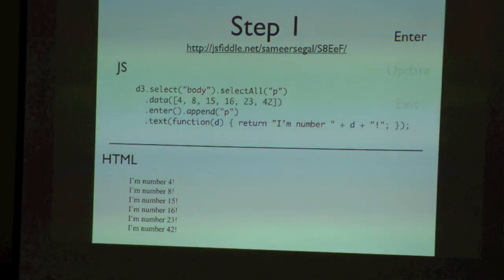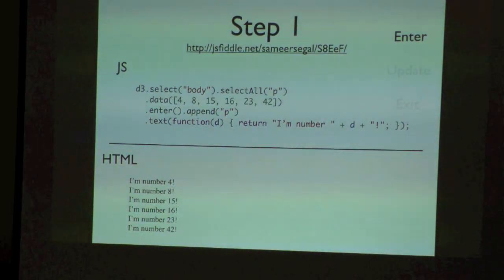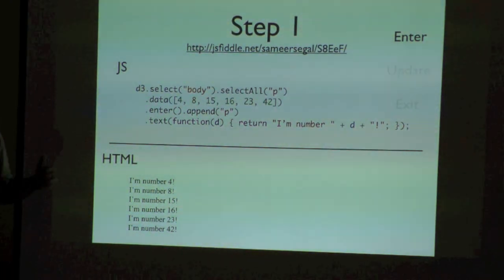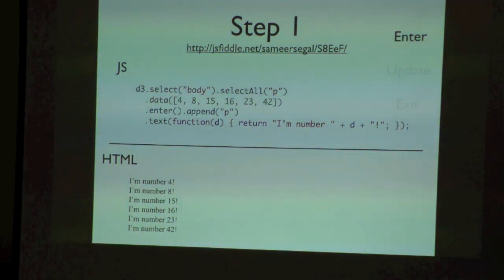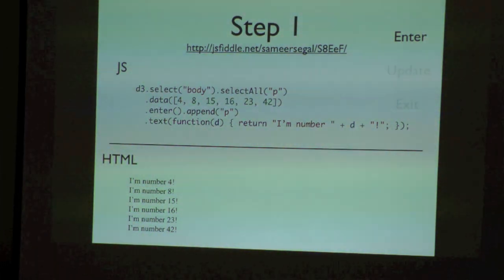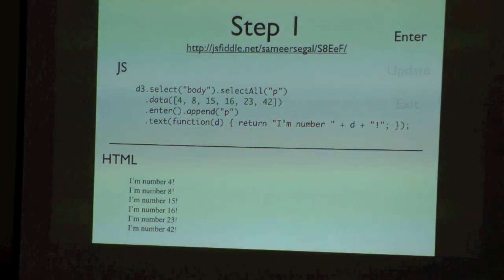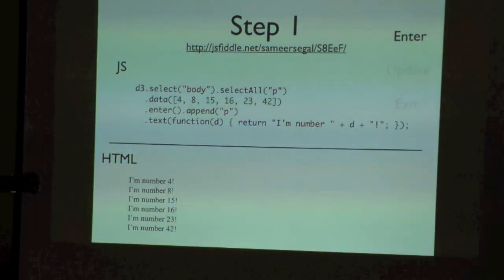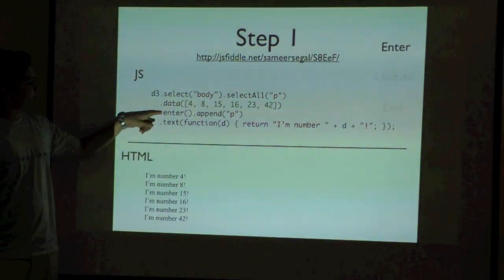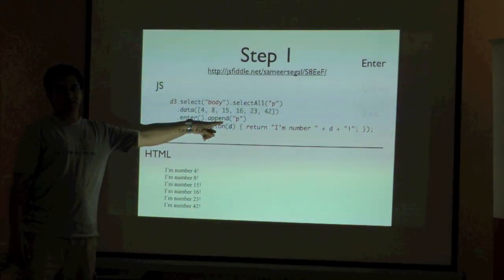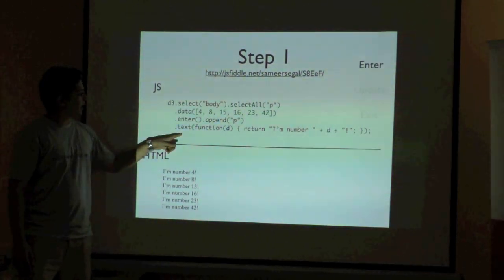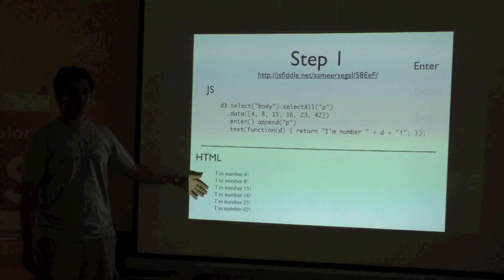In this case, I'm selecting the body and selecting all P elements in that — I may not have any elements. Then I can specify data. In this case the data is a simple array. And then I say enter. D3 is designed from the point of view of stages: there are three stages — enter, update, and exit. When you add new data, that's the enter stage. When that data changes, that's the update stage. And when that data point drops out, that's the exit stage. You can specify animations for each. Right now it's just creating a P element for each new data point, adding it to the body, and creating text — just three lines of code.